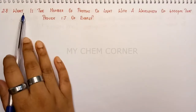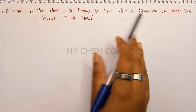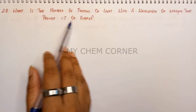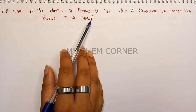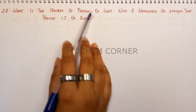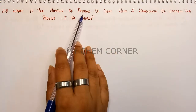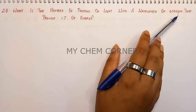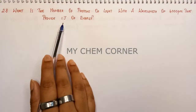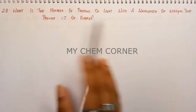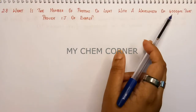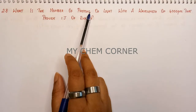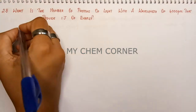The question is: what is the number of photons of light with a wavelength of 4000 picometers that provide one joule of energy? We need to calculate the number of photons when light of wavelength 4000 picometers provides one joule of energy. So energy is one joule, wavelength is 4000 picometers, and we need to find the number of photons.